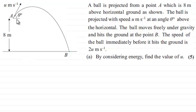And the ball moves freely under gravity and hits the ground at this point B. And the speed of the ball immediately before it hits the ground is 2u meters per second. And by considering energy we're asked to find the value of u for 5 marks.